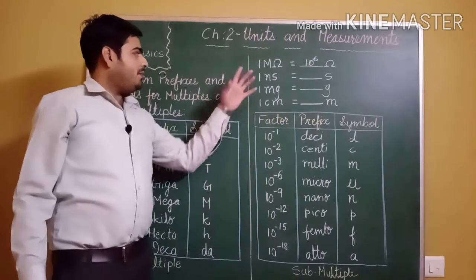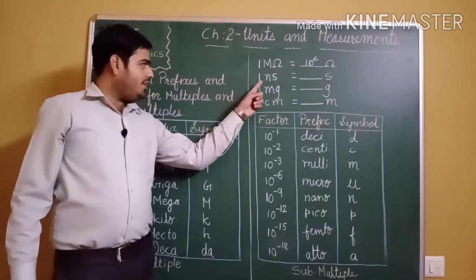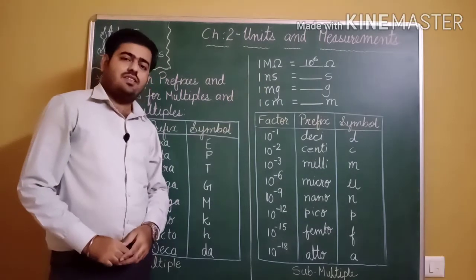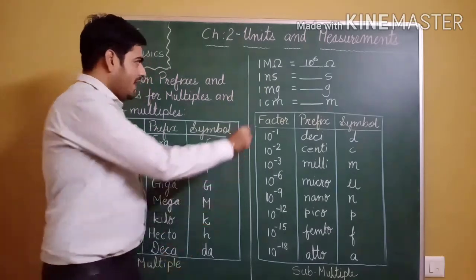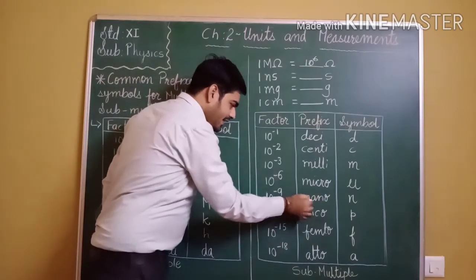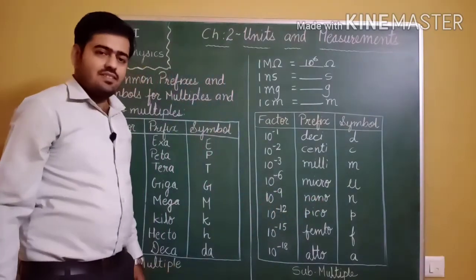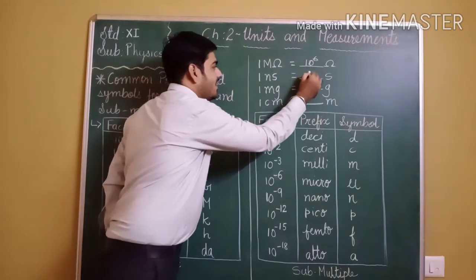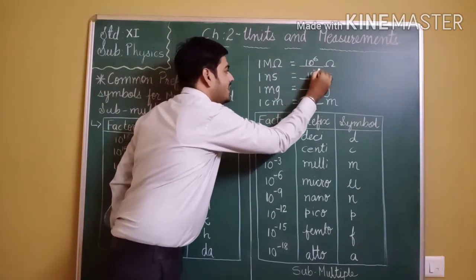Example 2: 1 nanosecond. Nano is in the submultiples table. Nano corresponds to 10 to the power minus 9. So 1 nanosecond is equal to 10 to the power minus 9 seconds.